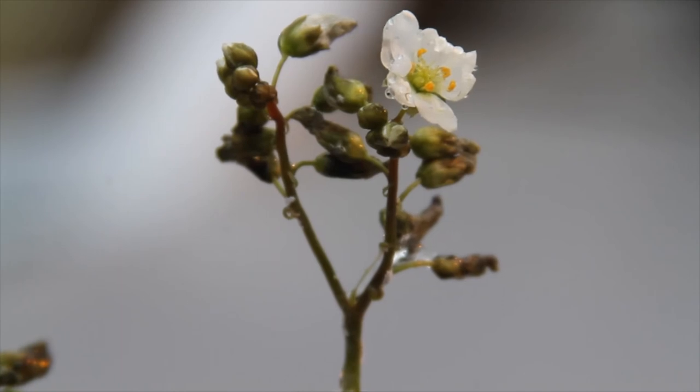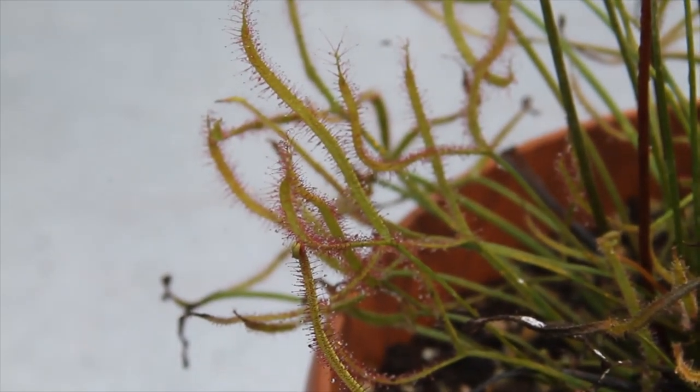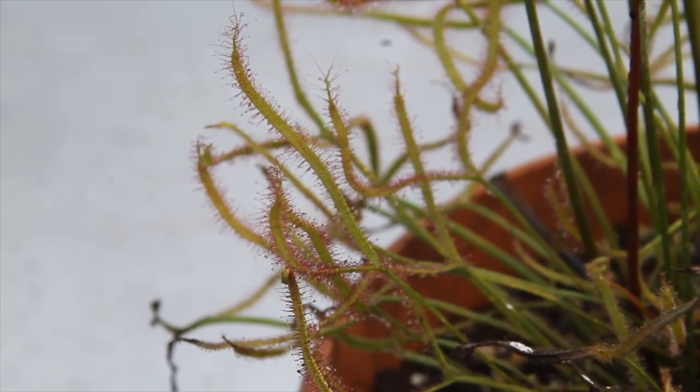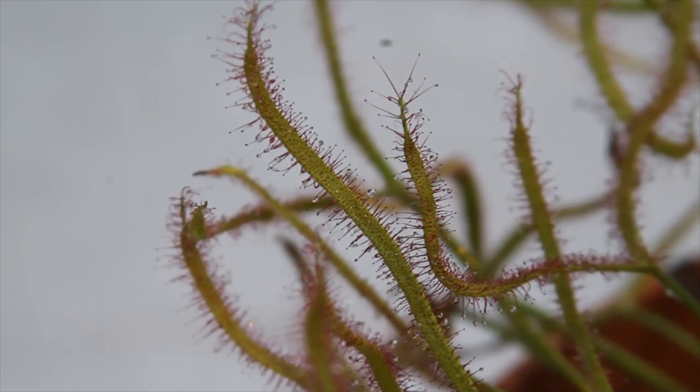It has little white flowers. And this plant is a carnivorous plant and it's a little different than the Saracenia. As you can see instead of having a pitfall trap for the insects, it produces these little droplets on the leaves. I'm going to zoom in on those a little bit so you can see. And those little droplets are sticky.